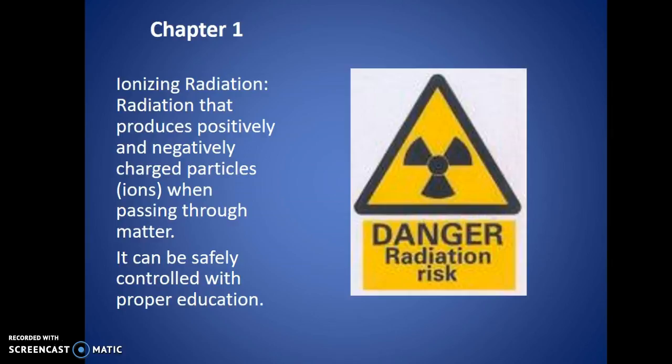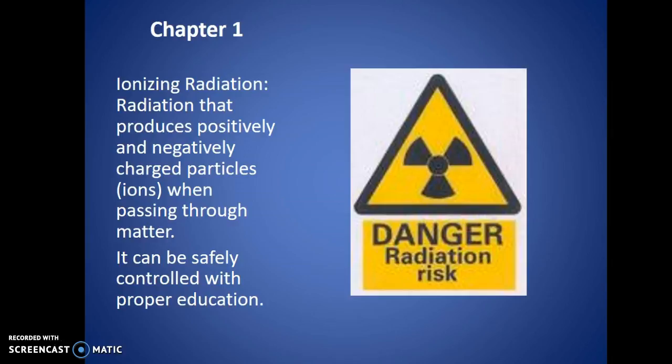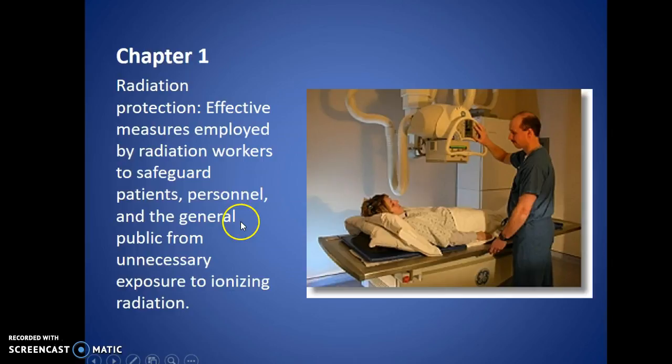Starting with ionizing radiation — just radiation that produces positively and negatively charged particles, ions, passing through matter. You just need to know this definition of what radiation is, especially ionizing radiation since we are in this field. It can safely be controlled with proper education. The more informed you are, the more aware of the risks you are. Effective measures employed by radiation workers safeguard patients, personnel, and the general public from unnecessary exposure to ionizing radiation.